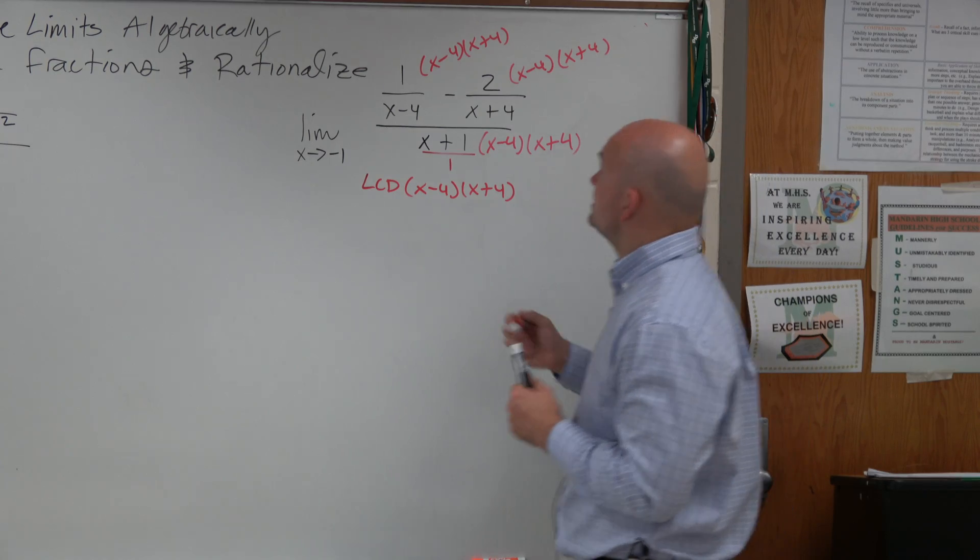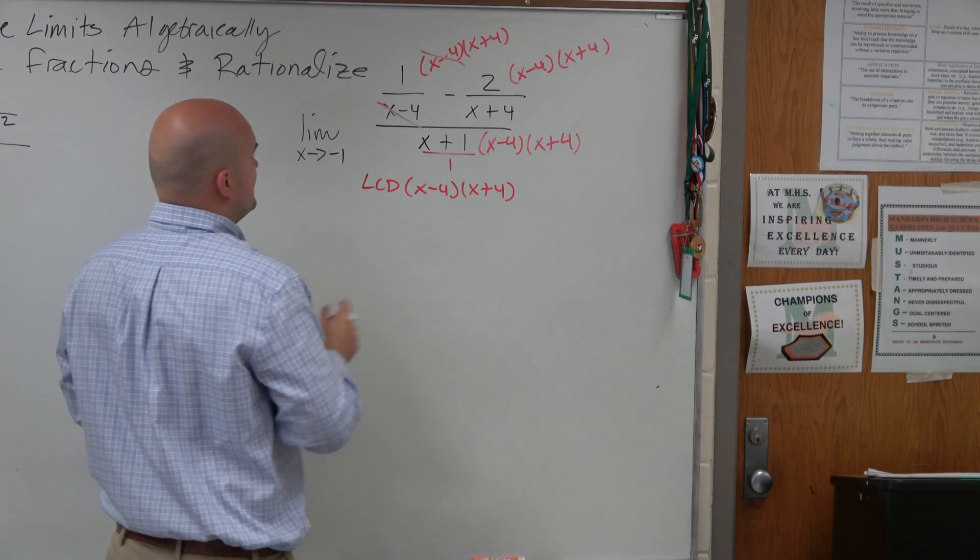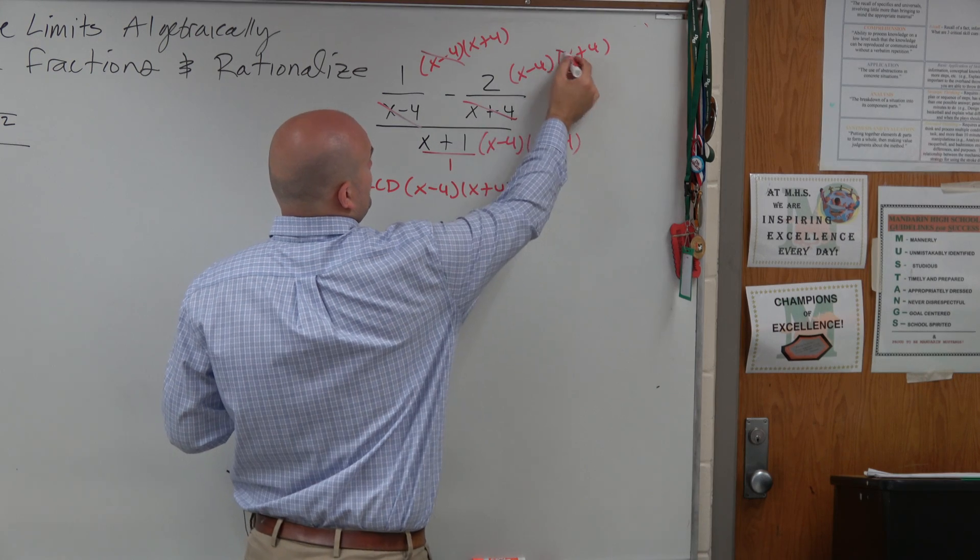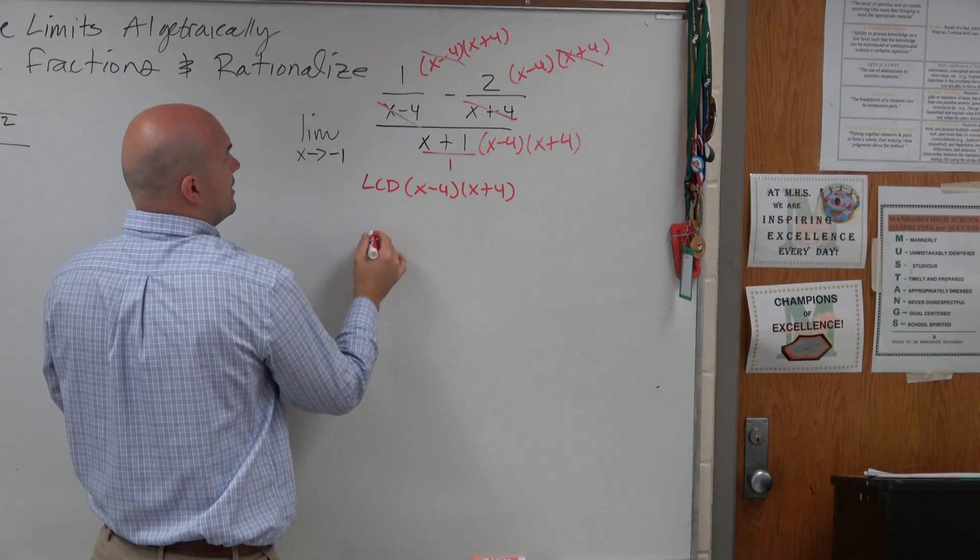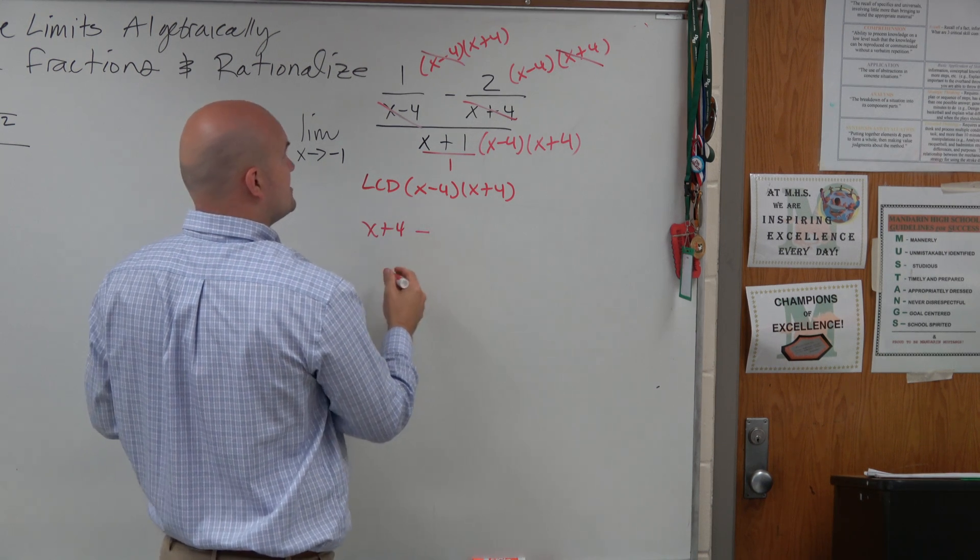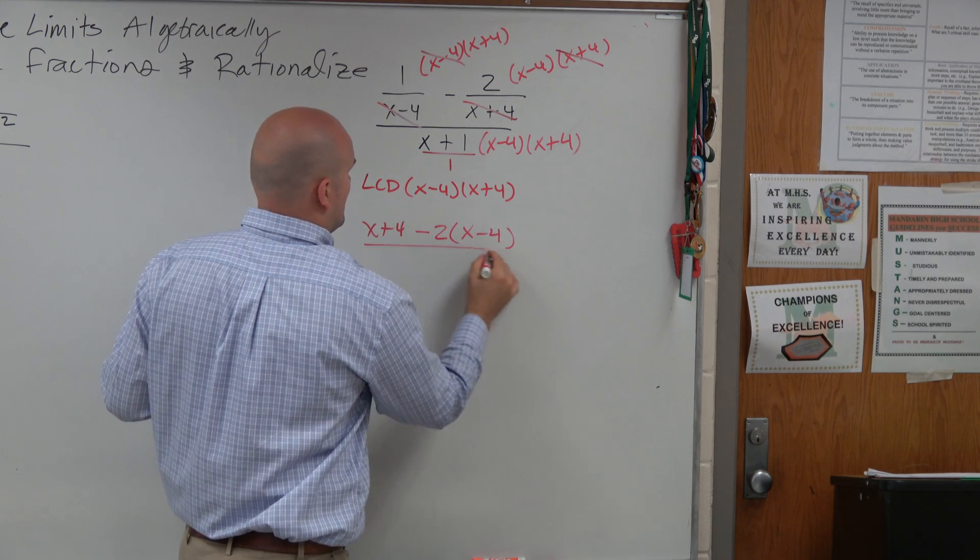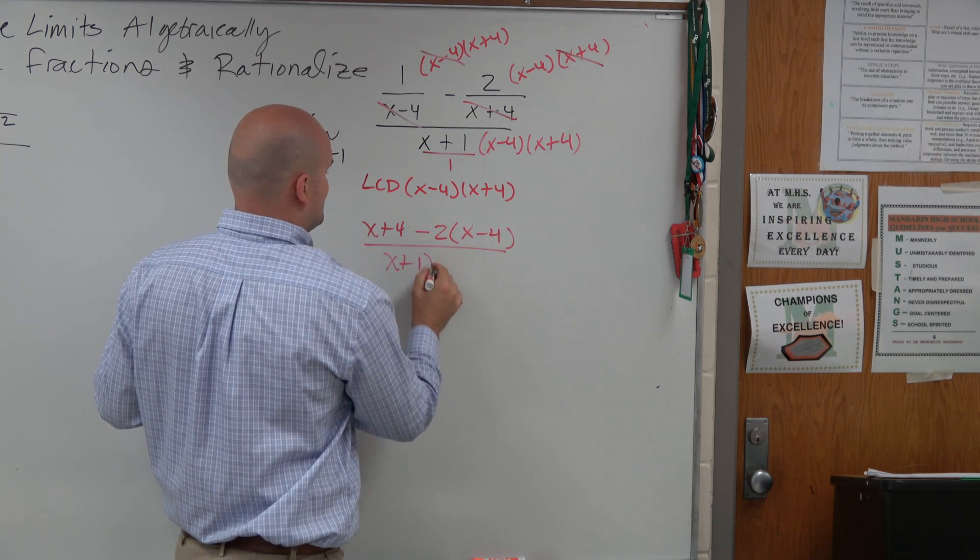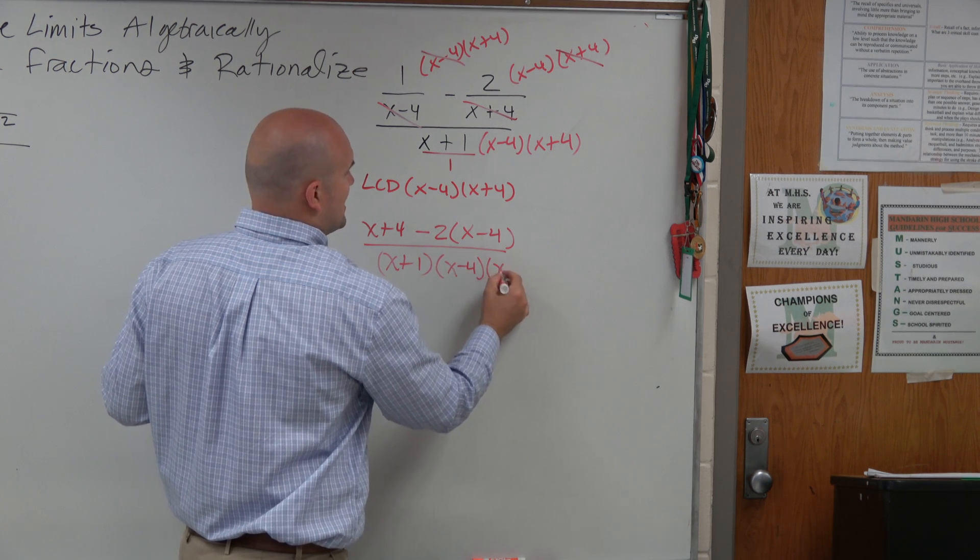By doing that, you guys can see these x minus 4s divide out. And so, therefore, we have x plus 4 minus 2 times x minus 4 all over x plus 1 times x minus 4 times x plus 4.